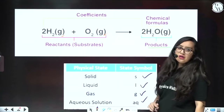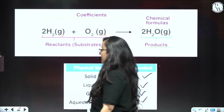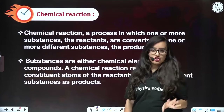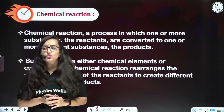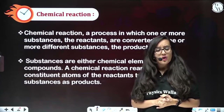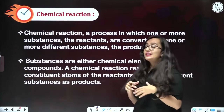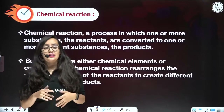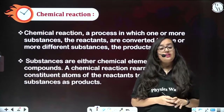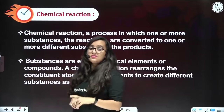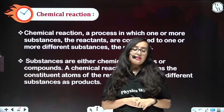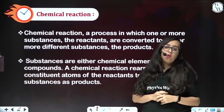From the equation you can also know the physical state of substances — so it is very informative. To summarize: a chemical equation is the shortest form of writing a chemical reaction. It consists of symbols, chemical formulas, reactants on the left-hand side, products on the right-hand side with an arrow in between, and physical state symbols assigned to each substance.